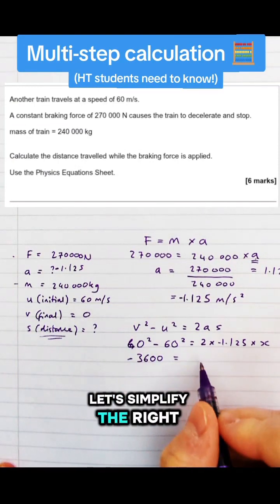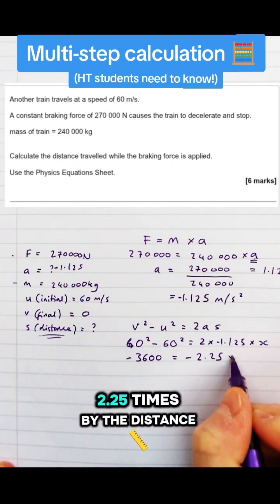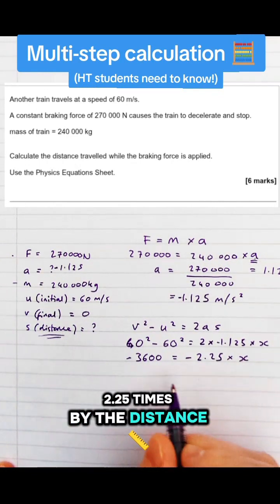And let's simplify the right hand side by doing two lots of 1.125, which gives us minus 2.25 times by the distance, the thing we're trying to find.